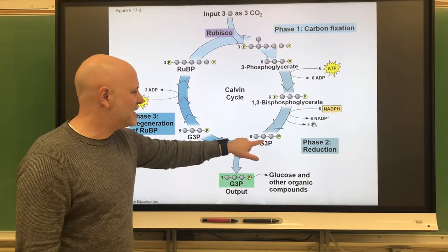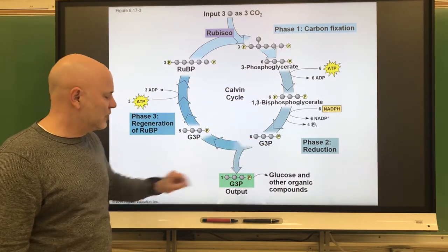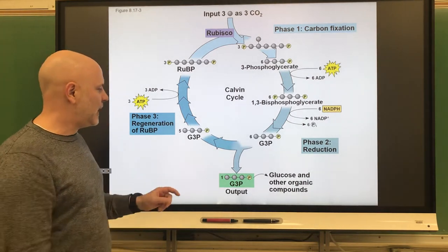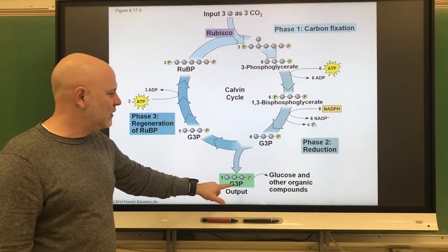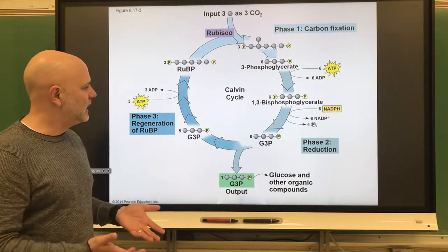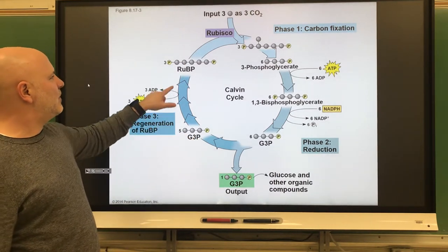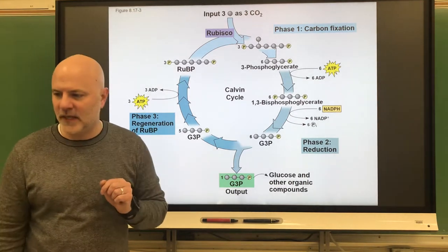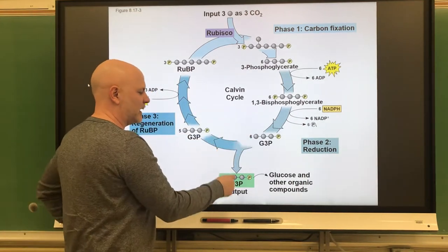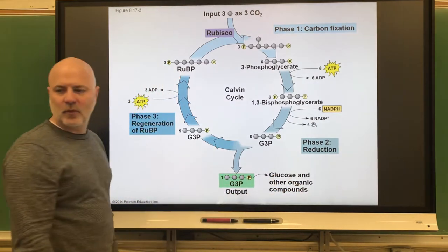G3P is the main product. We make six G3P here; one of those G3P leaves the cycle, and that's what's important — that's what we're trying to make. G3P is then used to make glucose or any other organic molecule that the plants need. The final step is reverting G3P back into our starting molecule of RUBP. It literally takes two turns of the Calvin cycle to make one glucose molecule.